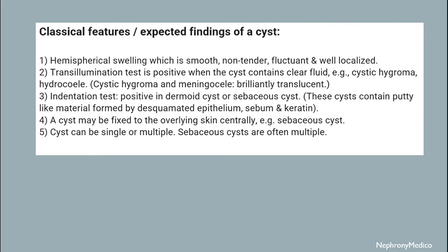The classical features of a cyst include hemispherical swelling which is smooth, non-tender, fluctuant, and well-localized. The trans-illumination test is positive when the cyst contains clear fluid, for example in cystic hygroma or hydrocele. The indentation test is positive in dermoid cysts because the content is putty-like material formed by desquamated epithelium, sebum, and keratin.